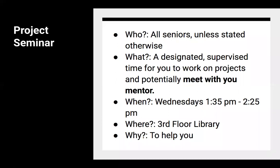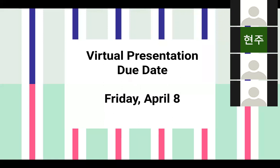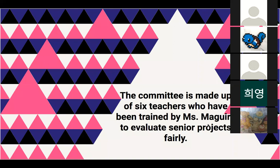Throughout the project, students have senior project seminar, which happens on Wednesdays from 1:35 to 2:25. That's when students can get direct help from Miss McGuire — she might bring them in individually or in groups. They have a designated time every single week to get help on the project. Their projects are due on Friday, April 8th, and they will create a virtual presentation that will be submitted and reviewed by the senior project committee. It's six teachers — Miss McGuire trains all of us to evaluate them. Every teacher grading the projects has been trained and knows exactly what they're looking for.